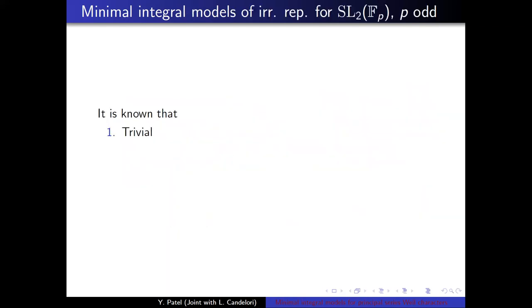So it is known that the trivial has Z. The Steinberg also has Z as its minimal integral model. And the principal series of dimension p plus one has Z adjoined with the principal root of unity.